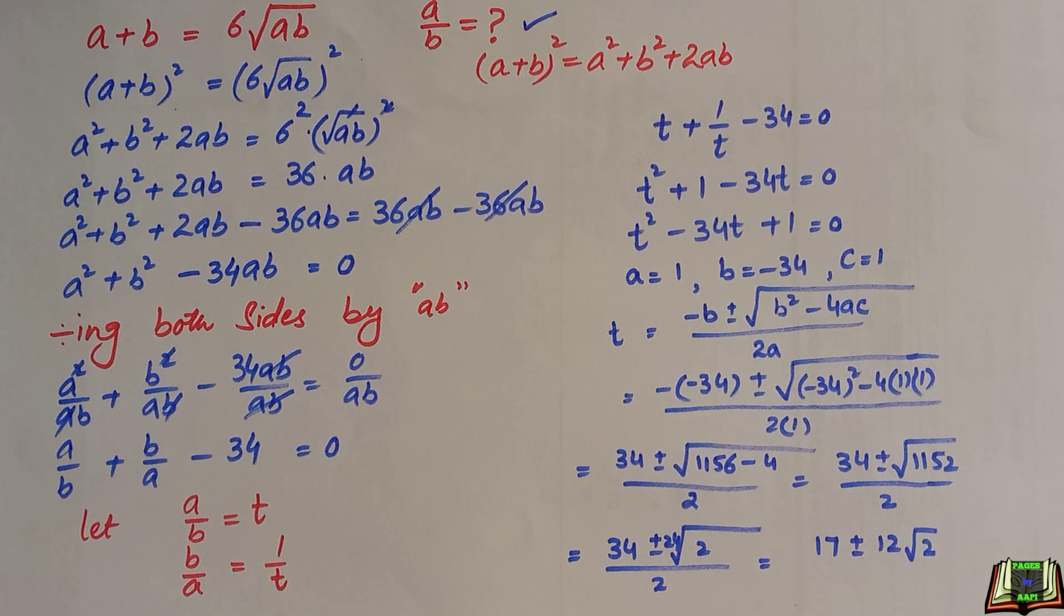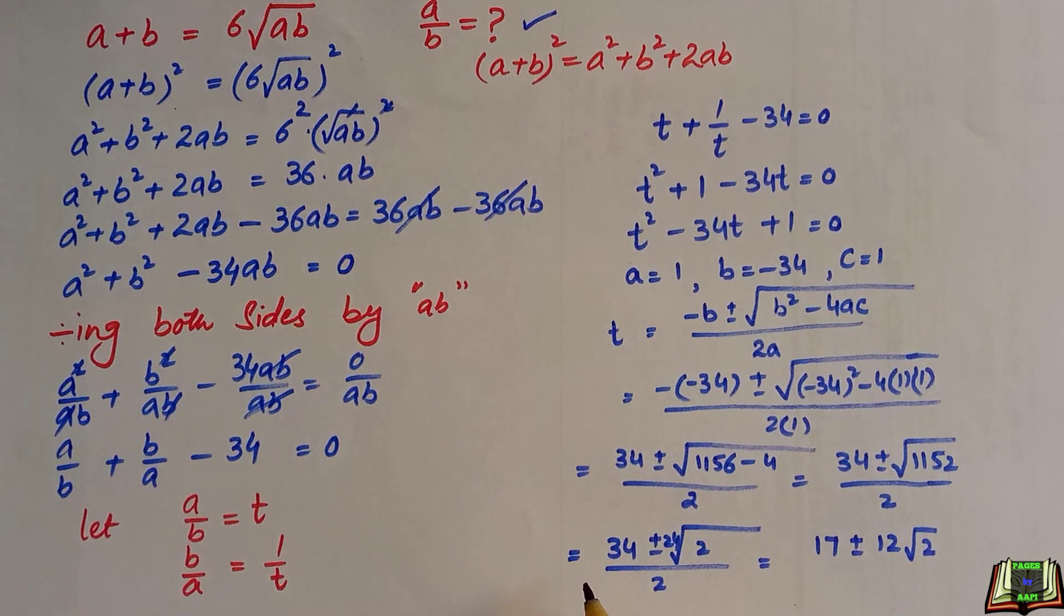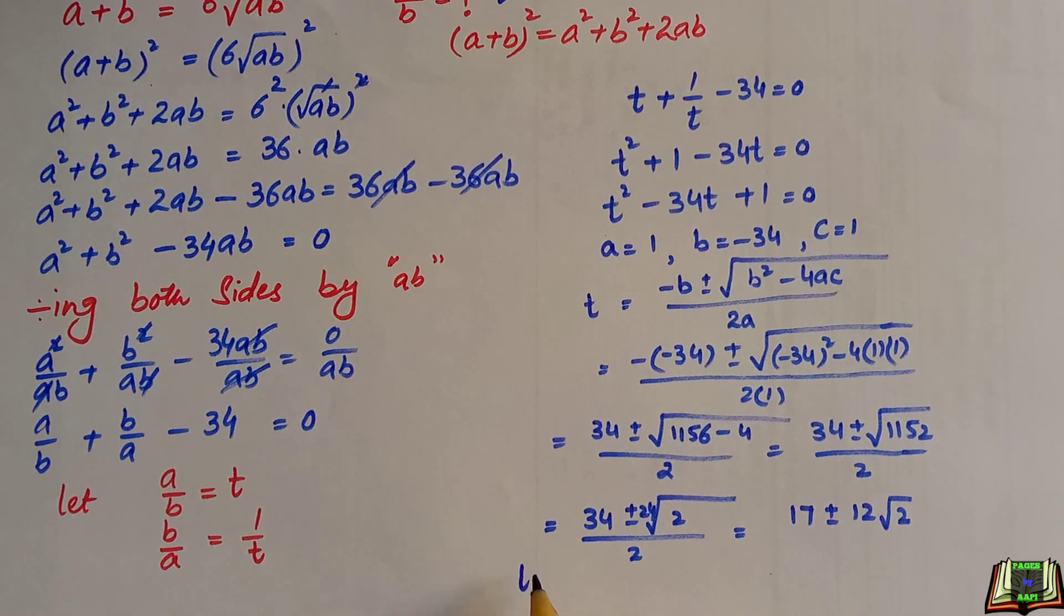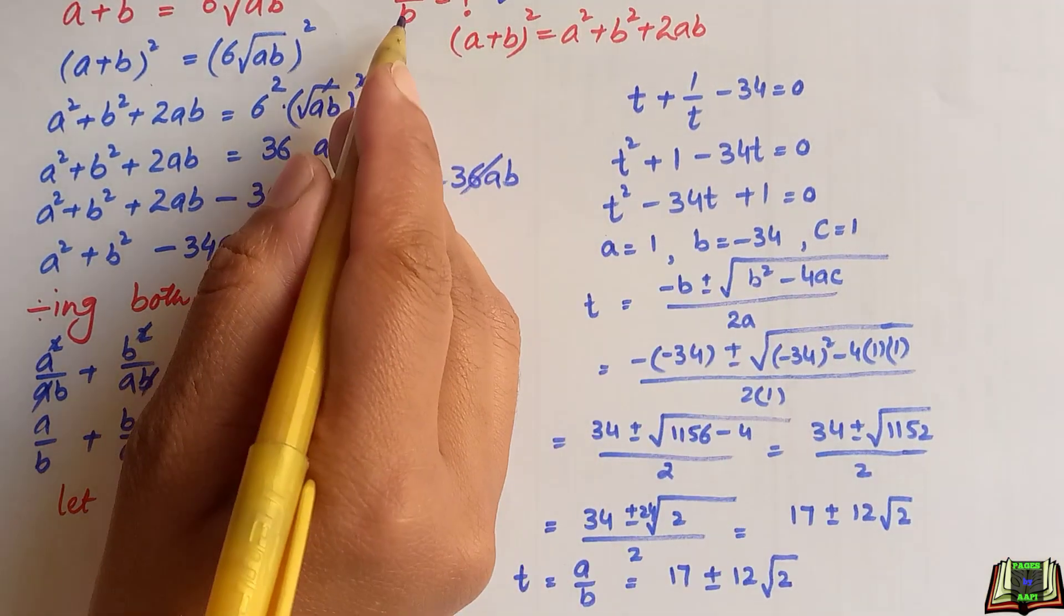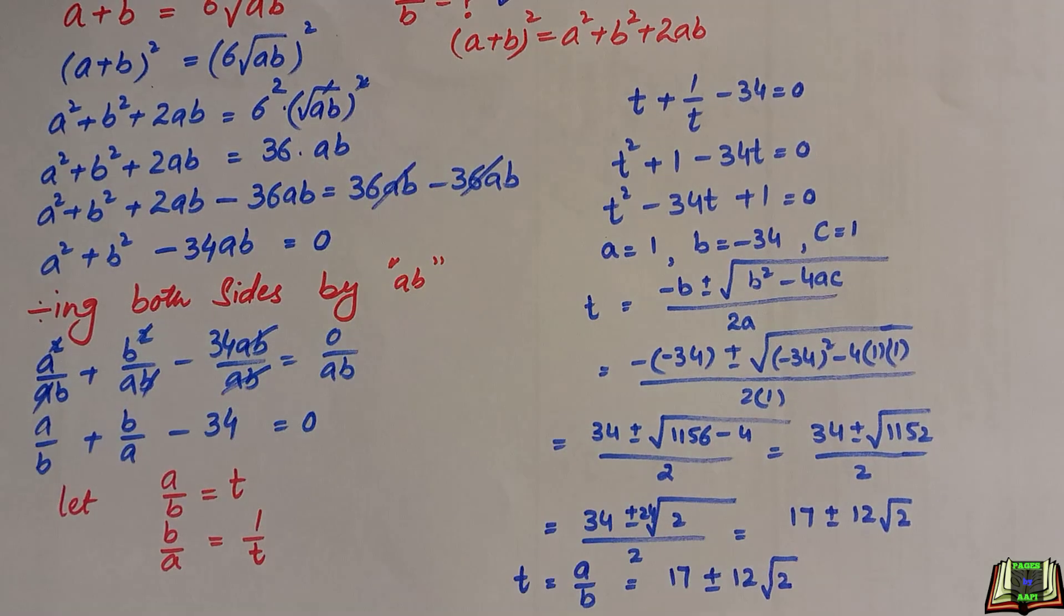As we know, this is the value of t and we also know that t is equal to a over b. So, we got the value of t which is equal to 17 plus minus 12 root 2 and we are supposed to find the value of a over b in the question. So, we got the required answer.